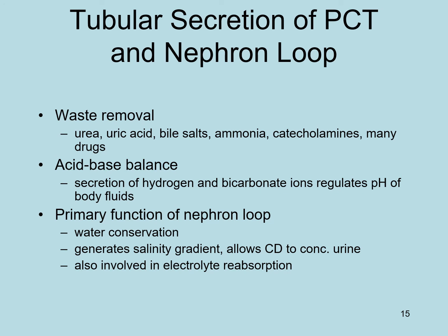The primary function of the nephron loop (loop of Henle) is water conservation and generating a salinity gradient that allows the collecting duct to concentrate urine. It also involves electrolyte reabsorption. The thin segment is permeable to water, while the thick ascending segment is impermeable to water but reabsorbs electrolytes — sodium, potassium, and chloride — via a specific co-transporter.